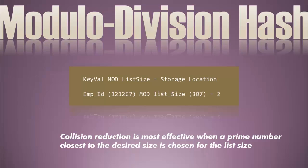Mod division is the simplest of the hash algorithms. We take the key value — the value we want to place into the list — and mod it by the size of the data container. In the example here, employee ID 121267 mod 307 gives us an index of two. That means we insert the employee ID into the second subscript of the list. It's real simple and clean, but it tends to generate a lot of collisions and tends to cluster quite a bit as well.